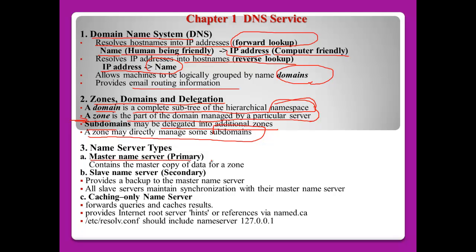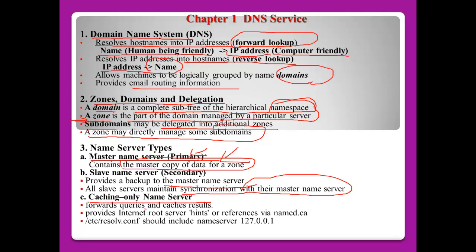Number three: name server types. A master name server acts as the primary — it normally contains the master copy of data for a zone and supplies all information for specific zones. A slave name server acts as secondary, providing backup to the master name server, and all slave servers maintain synchronization with their master. A caching-only name server forwards queries and caches the results, and does not have a copy of zone data.